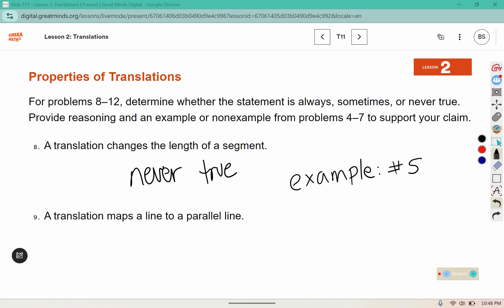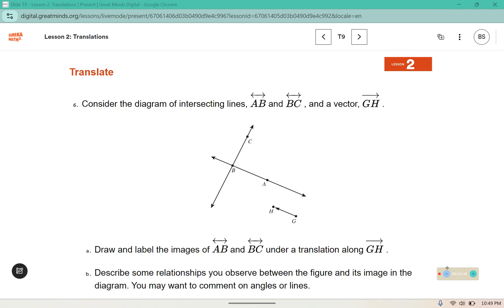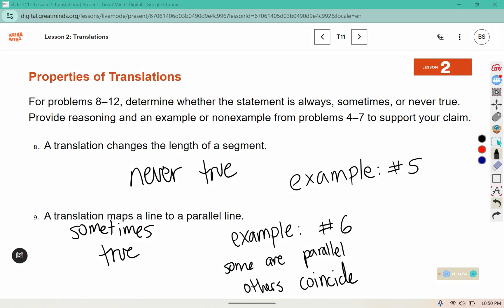A translation maps a line to a parallel line. This one is sometimes true, and we'll go back and look at why. In problem 6, when we translated along vector GH, CB was creating a parallel line with its image, but AB and A'B' weren't parallel, they actually coincide, meaning they lay on top of each other or take up the same space. So our example, some of them are parallel but others coincide or are on the same line.